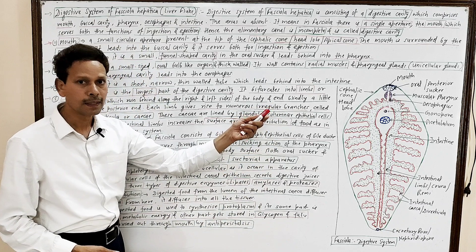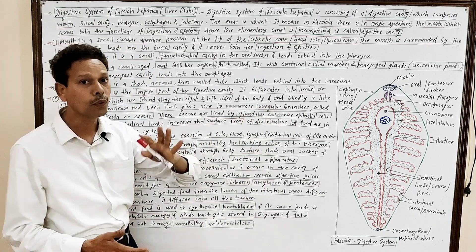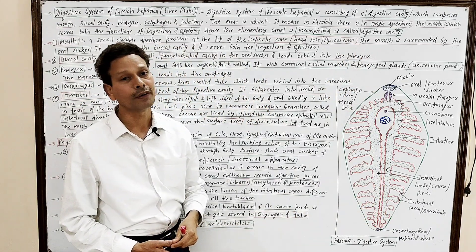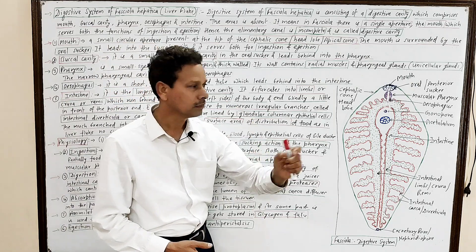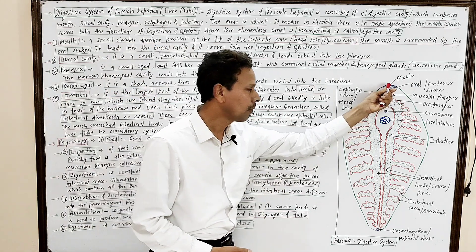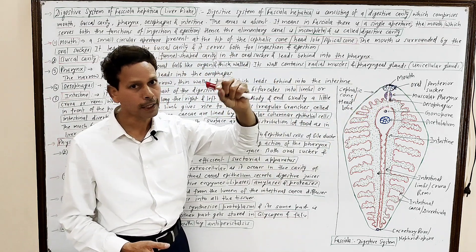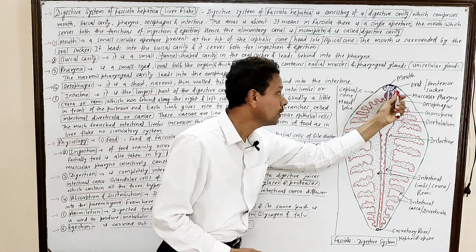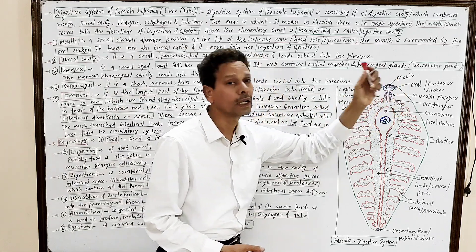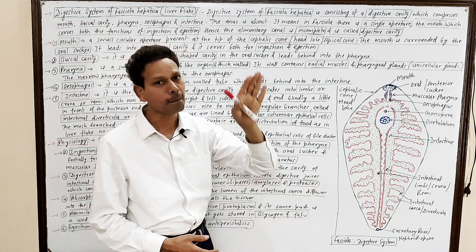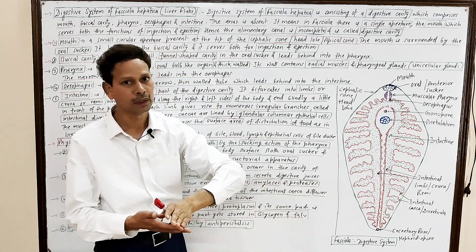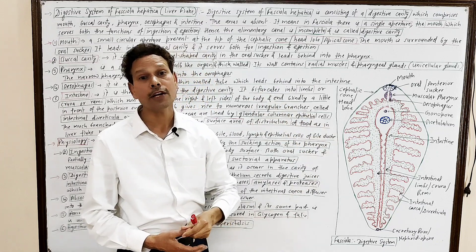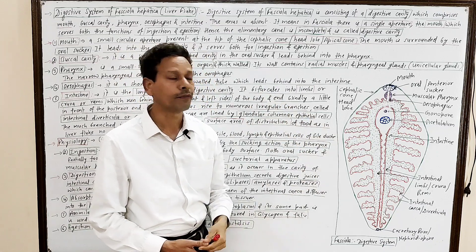This is a summary of the digestive system of liver fluke. The mouth is a small circular aperture at the terminal part, surrounded by the oral sucker. The mouth serves both ingestion as well as egestion of undigested food.